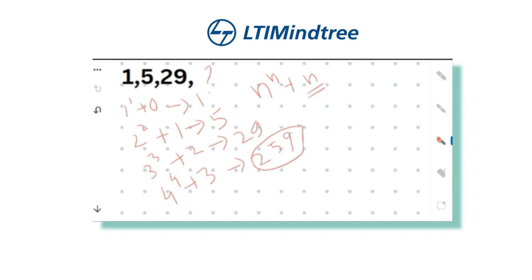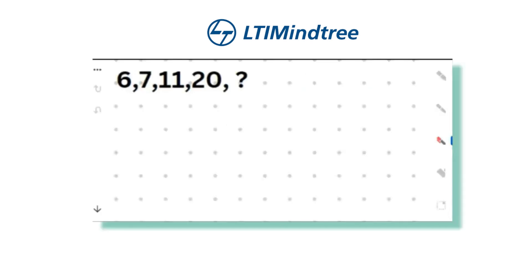Let's check the next problem. I'm giving you two to three seconds — please pause and try to give the answer in the comment section. The series is 6, 7, 11, 20. The prime pattern doesn't apply since 6 is not prime. Checking differences: 7 minus 6 is 1, 11 minus 7 is 4, and 20 minus 11 is 9. A nice pattern is emerging in the differences.